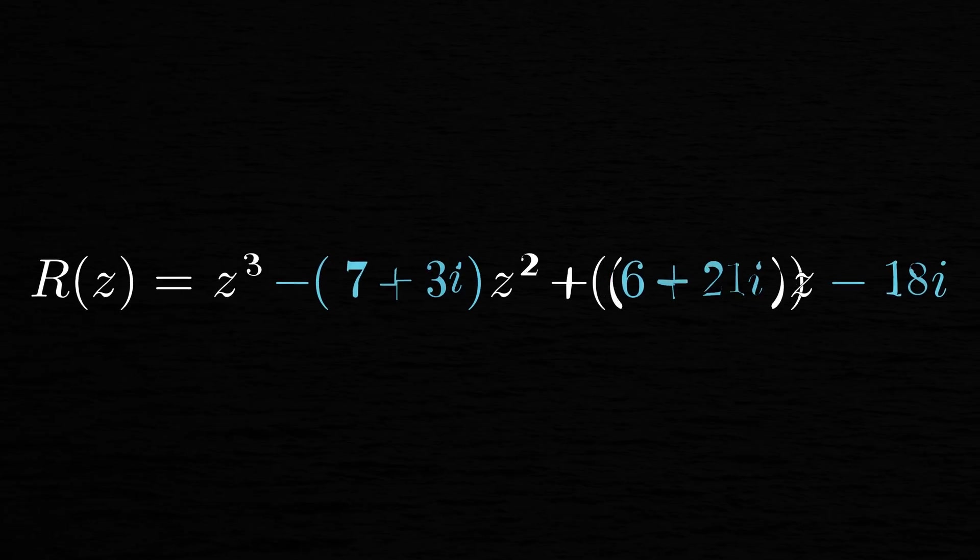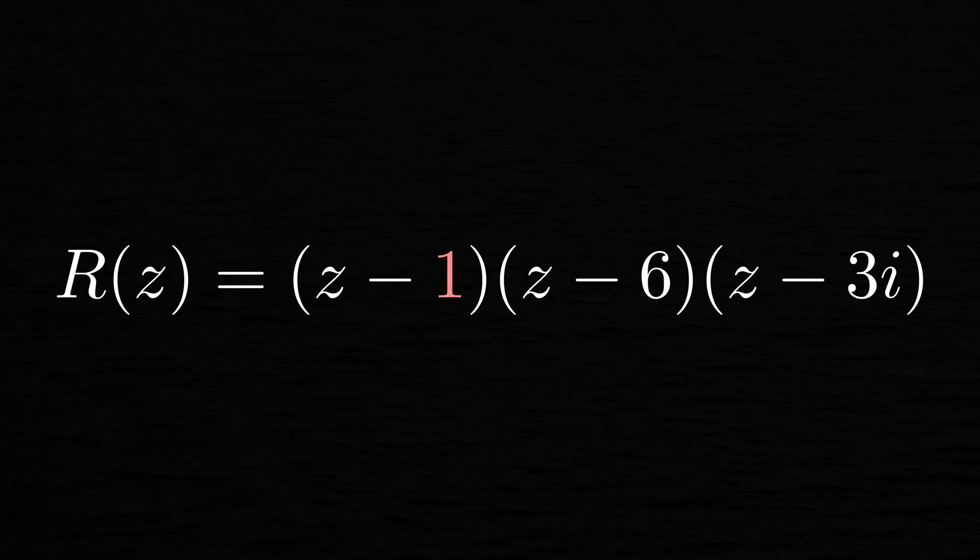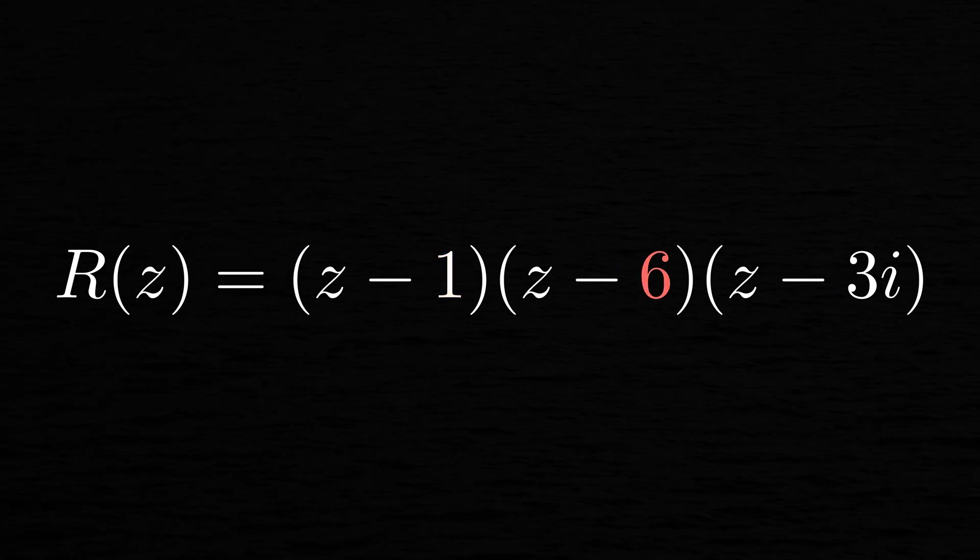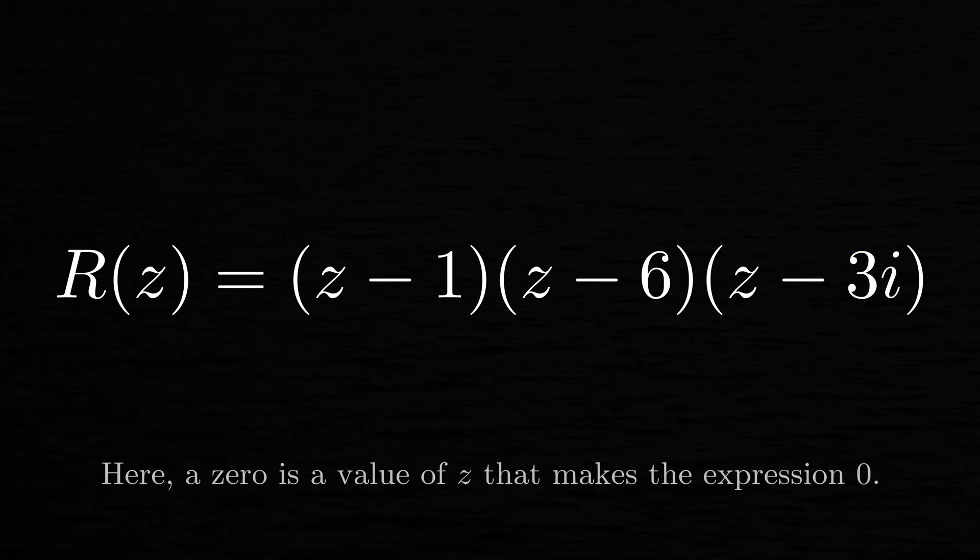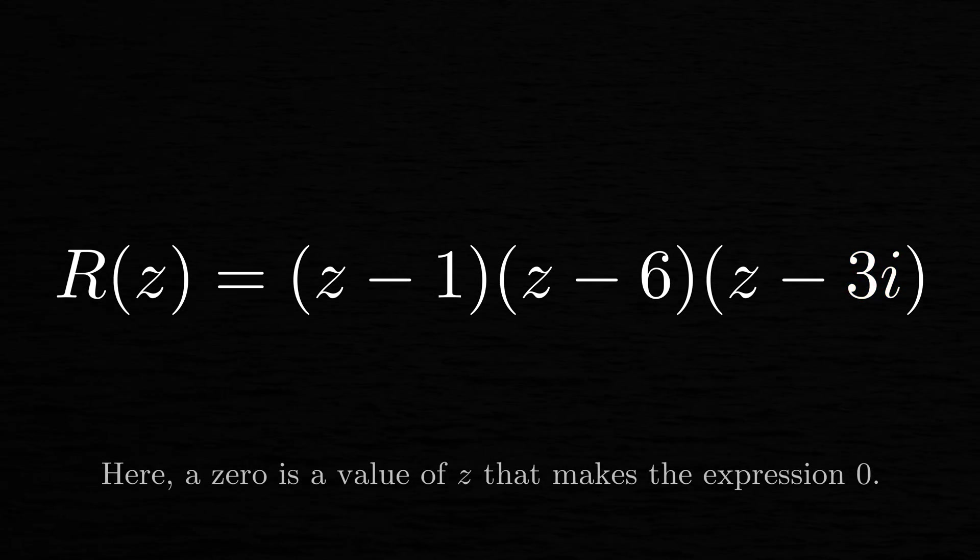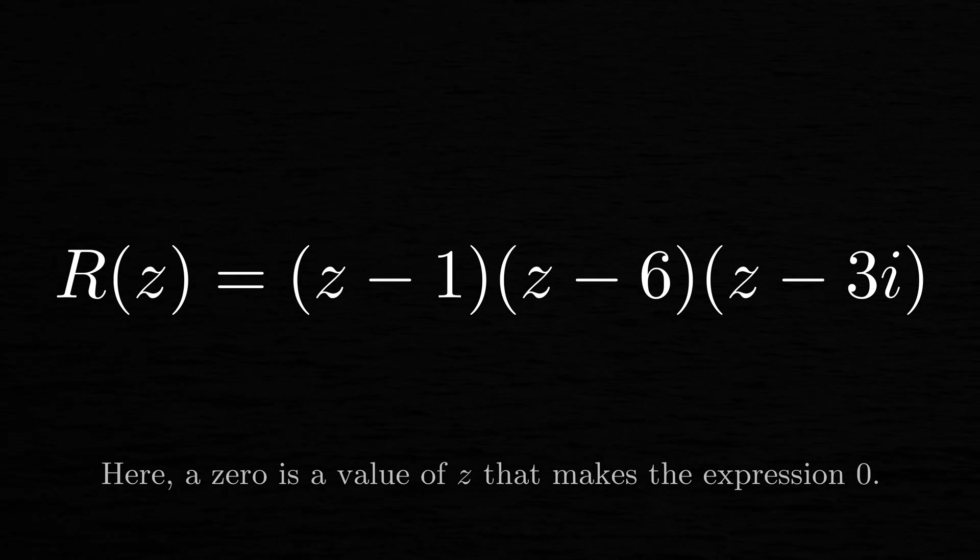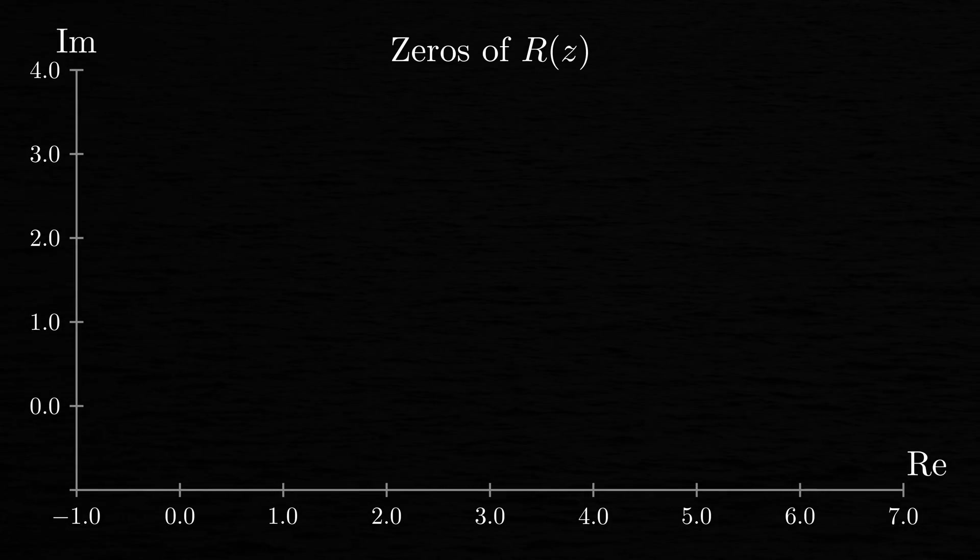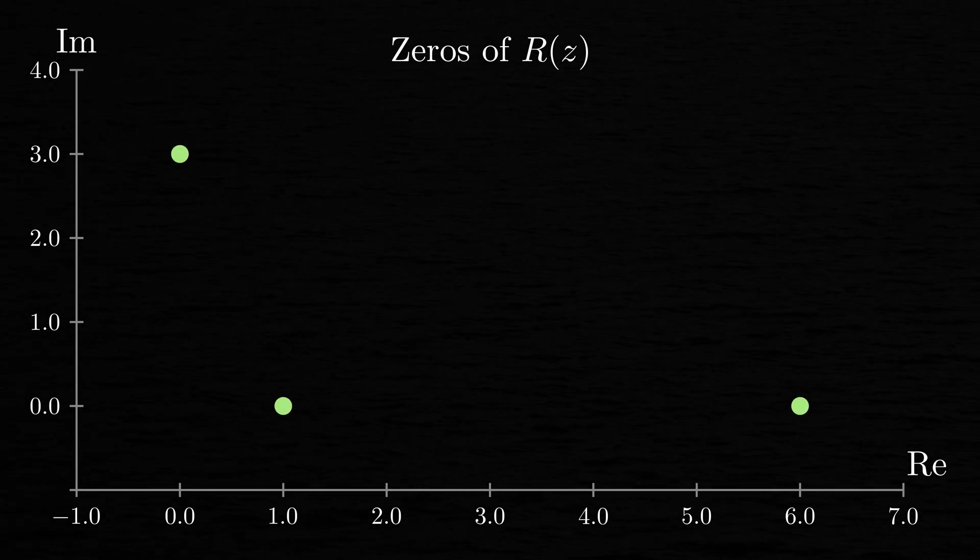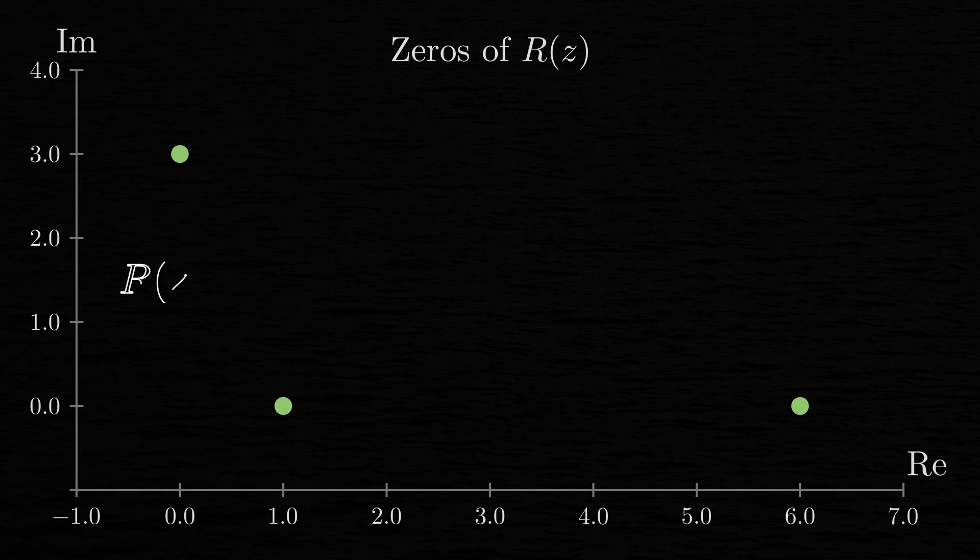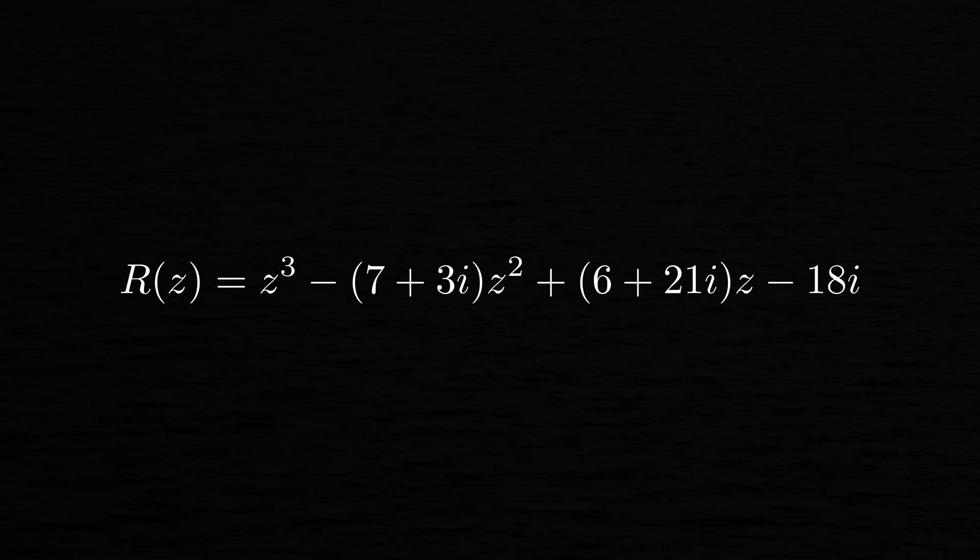Anyway, I chose this particular polynomial so that it can be factored nicely as z minus 1 times z minus 6 times z minus 3i. Of course, this means that r has the three zeros z equals 1, z equals 6, and z equals 3i. And we can plot these three zeros on the complex plane if we want to, like this. Great! Let's return to the expanded form of this polynomial r.